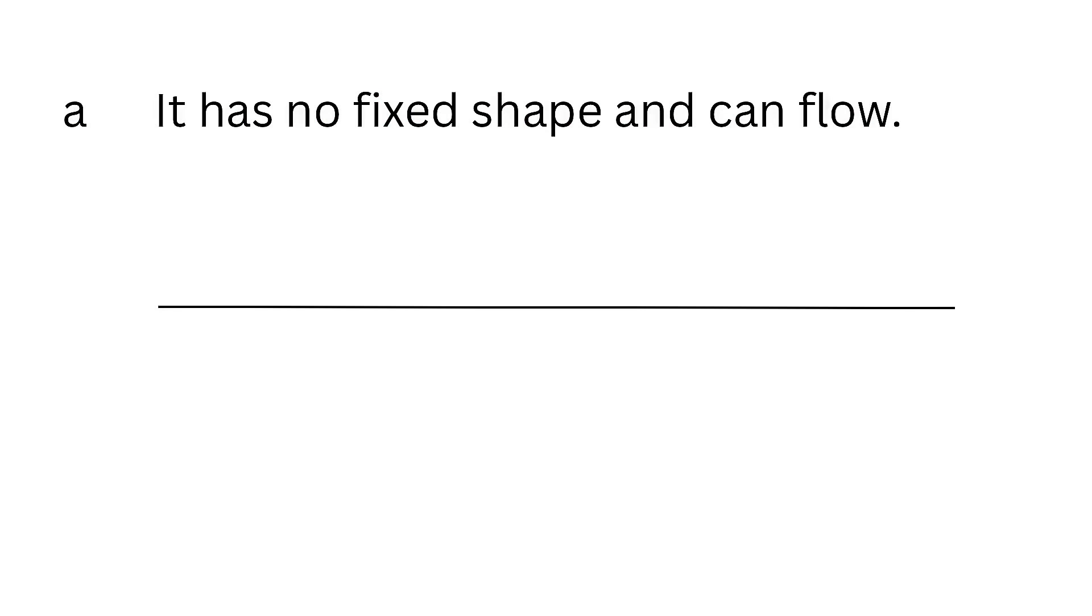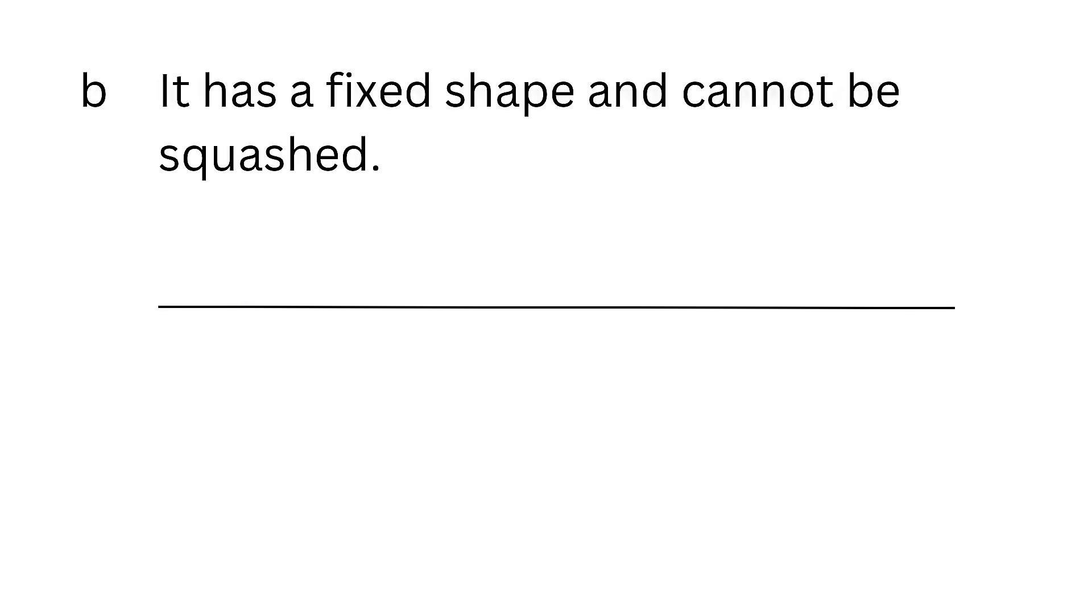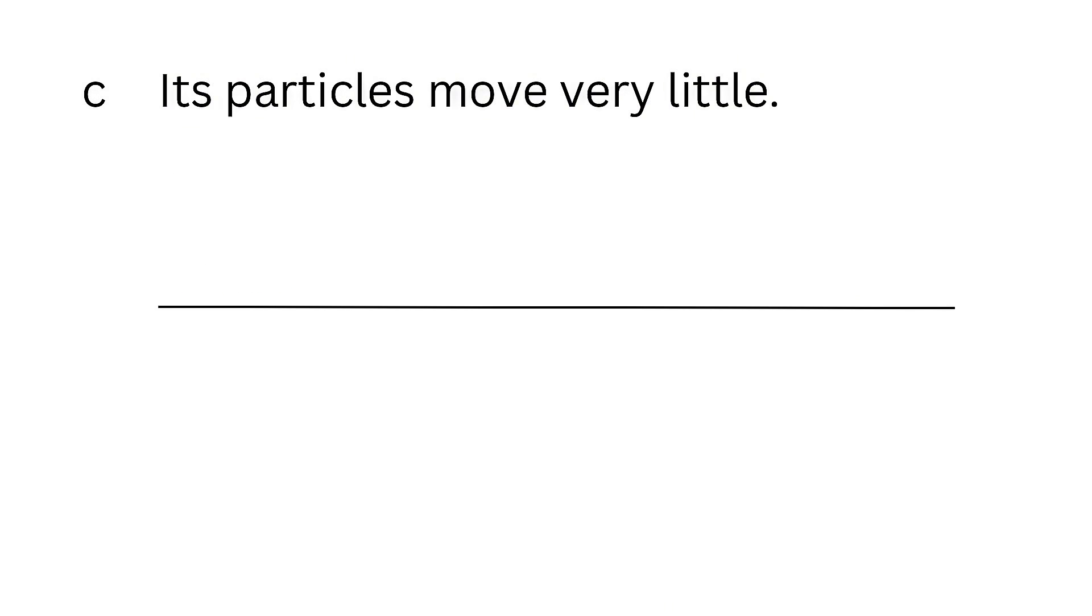Statement A: It has no fixed shape and can flow - liquid. B: It has a fixed shape and cannot be squashed - solid. C: Its particles move very little - solid. D: Its particles move around each other - liquid. E: Its particles are quite close together - liquid.